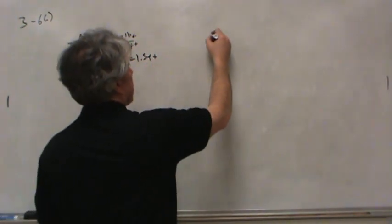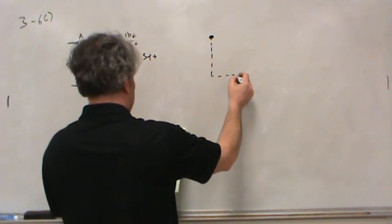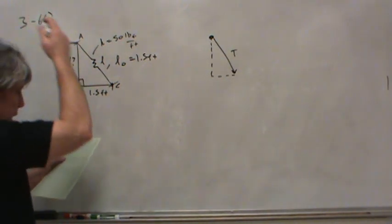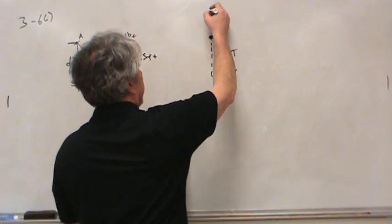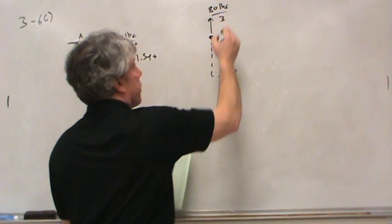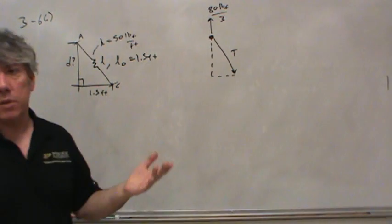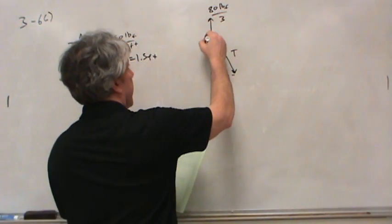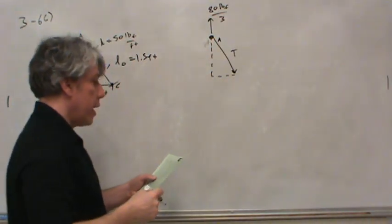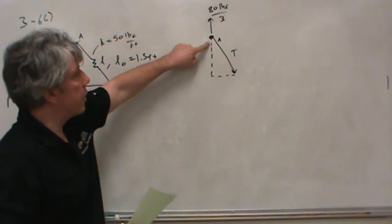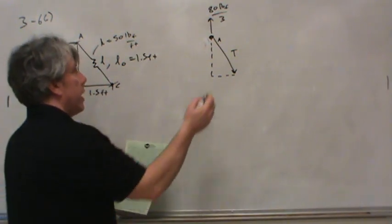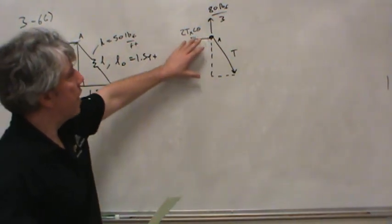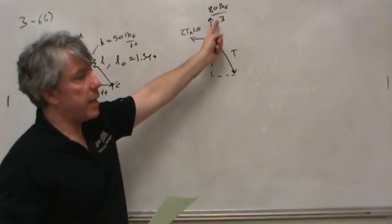I'm going to make a free body diagram looking at point A. There must be tension on point A, and there's a force pulling up of 80 pounds. I'm not going to use all 80 pounds — I'm going to use a third of it, because I only want to look at one spring and I'm assuming all three springs take the force equally. So I apply 80/3 pounds to point A.